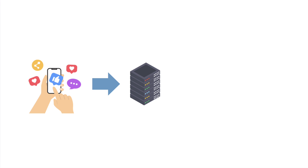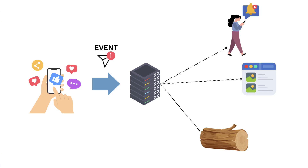Next, social media. When you post an update or like a photo, you're actually generating events. Those events might trigger notifications to your friends, update your feed, log engagement data, or even trigger content moderation — all happening asynchronously and in real time using event-driven principles. It keeps the platform responsive, scalable, and able to process millions of interactions per second without centralizing everything into one big system. These examples show how event-driven design helps systems react quickly, stay modular, and scale effectively.